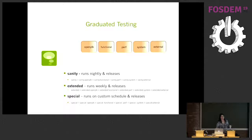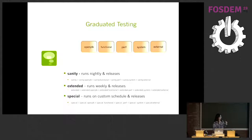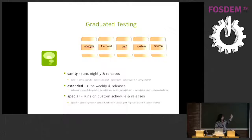With those different logical groups of tests, since no open source community has unlimited machines, we've logically separated the tests into three levels: sanity, extended, and special.